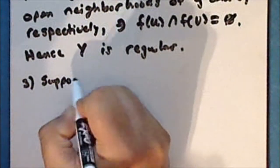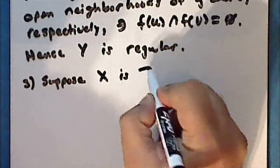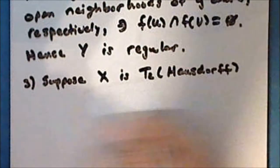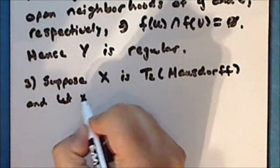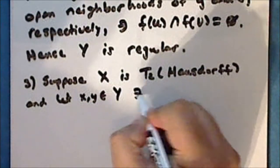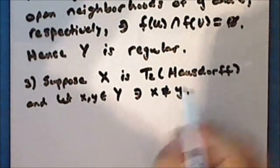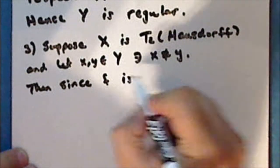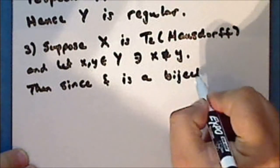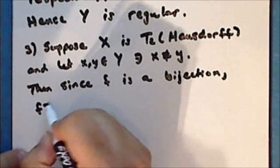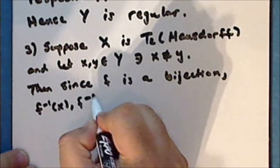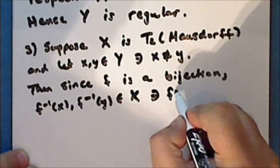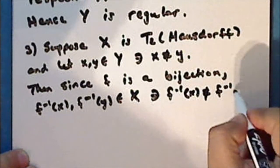Suppose that the space X is T2, or Hausdorff, and let the points x and y be points in the space Y such that x is not equal to y. Then, since the function f is a bijection, the inverse of x and the inverse of y are points in the space X such that the inverse of x is not equal to the inverse of y.